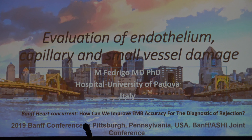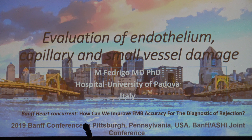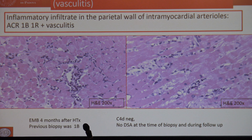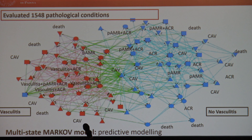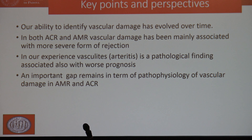The next speaker was Marni-Fredigo from Padova University, studying vasculitis during rejection. Vasculitis is a special pattern observed in some biopsies — inflammation of venules, arterioles, and small arteries. She did the modeling of this pathological observation, confronting this inflammation of vessels with pathological conditions like death, cardiac allograft, vascular pathology, cellular rejection, and so on. She showed finally that we have to take into account, when reading the biopsy, vascular inflammation, and that in both cellular and antibody-mediated rejection, vascular damage has been associated with a severe form of rejection, mainly when the inflammation involves arteries.